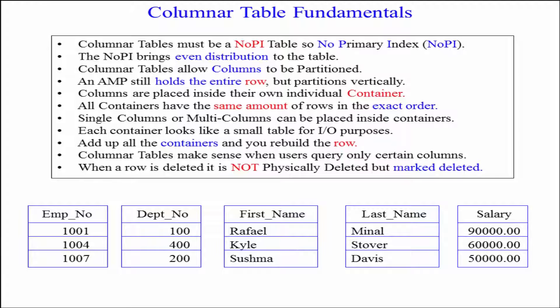An AMP still holds the entire row, but partitions vertically. Columns are placed inside their own individual container. Think of them as blocks.